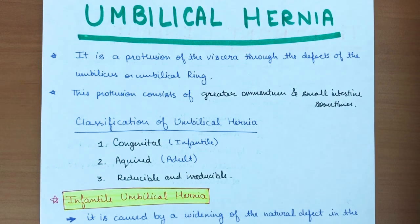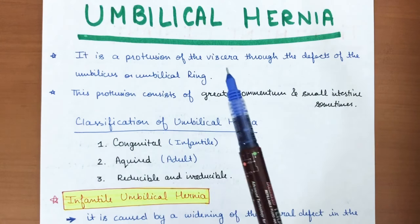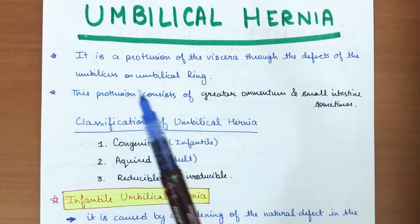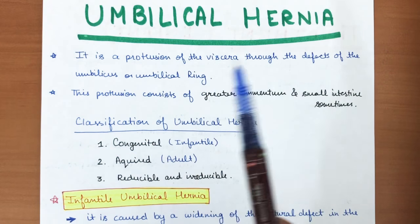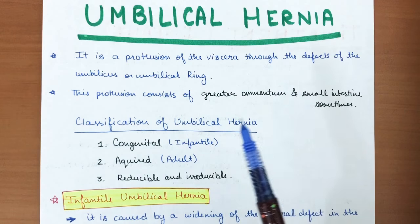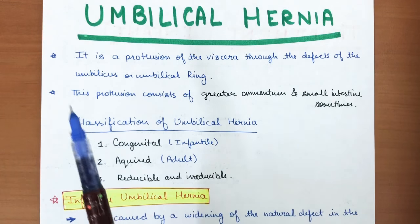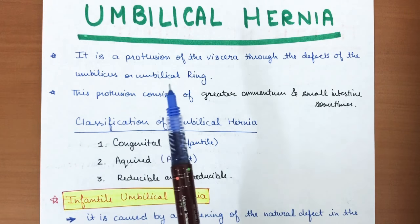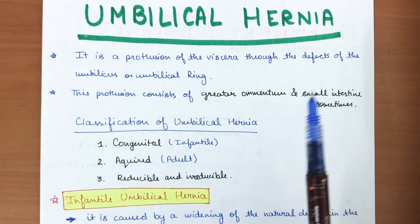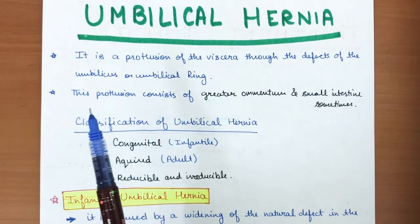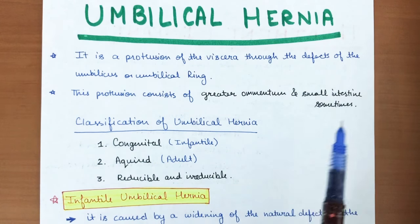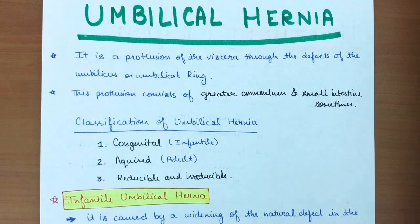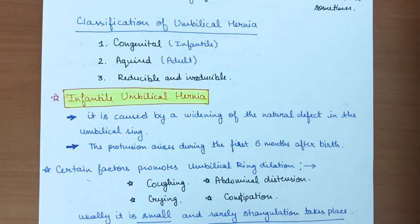In this video we'll cover umbilical hernia. Basically, umbilical hernia is the protrusion of viscera through a defect in the umbilicus or umbilical ring. This protrusion consists in most cases of the greater omentum and small intestine.